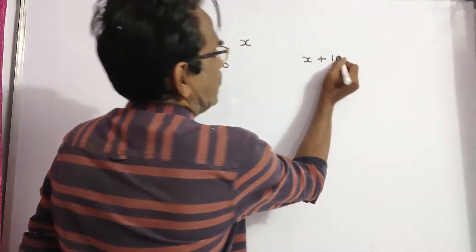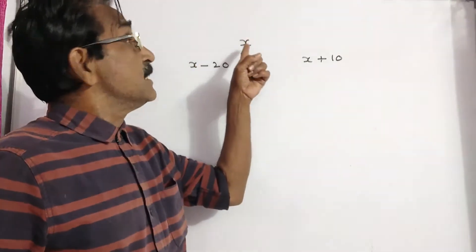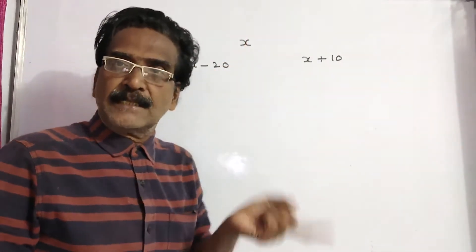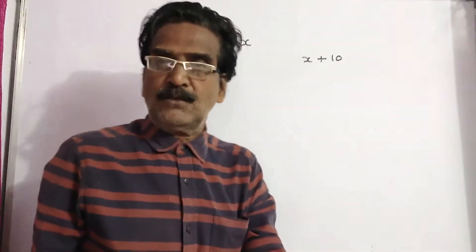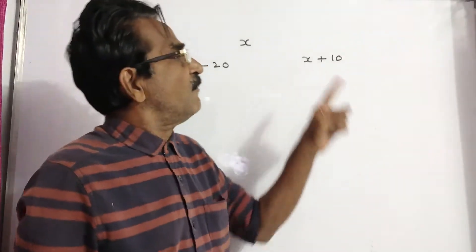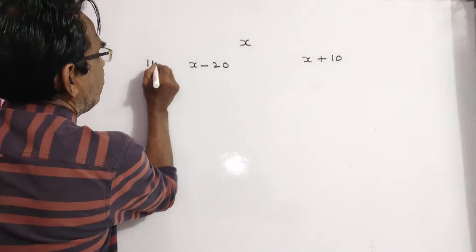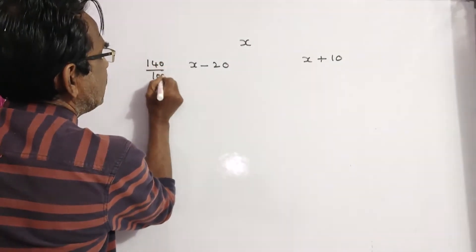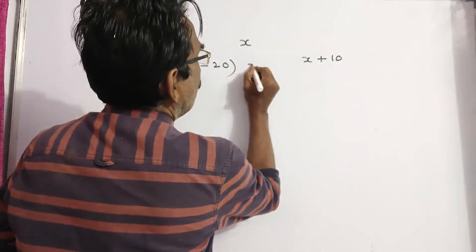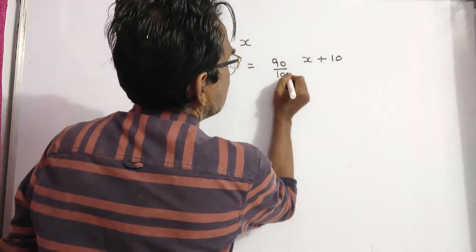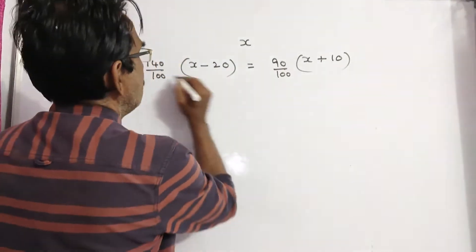Now the problem says 140% of his age 20 years ago is equal to 90% of his age after 10 years. So, 140% of his age 20 years ago is equal to 90% of his age after 10 years. These two things are the same.